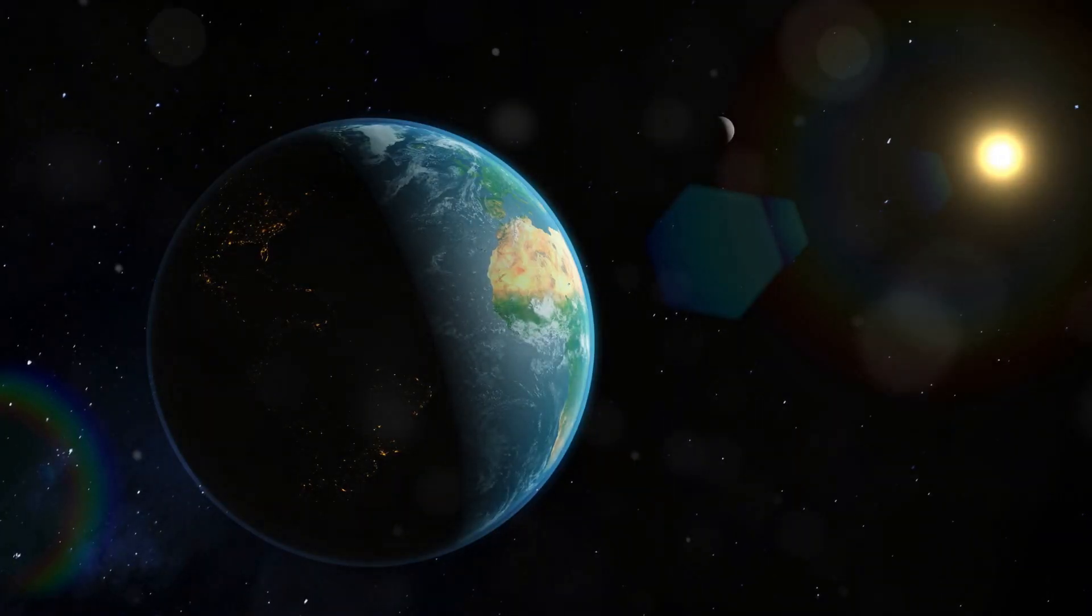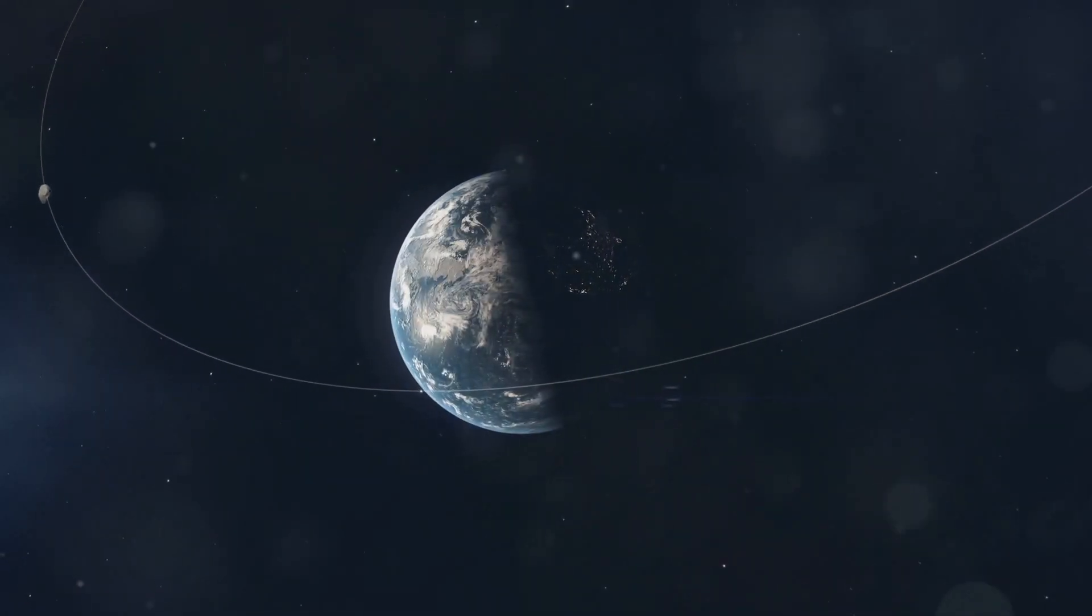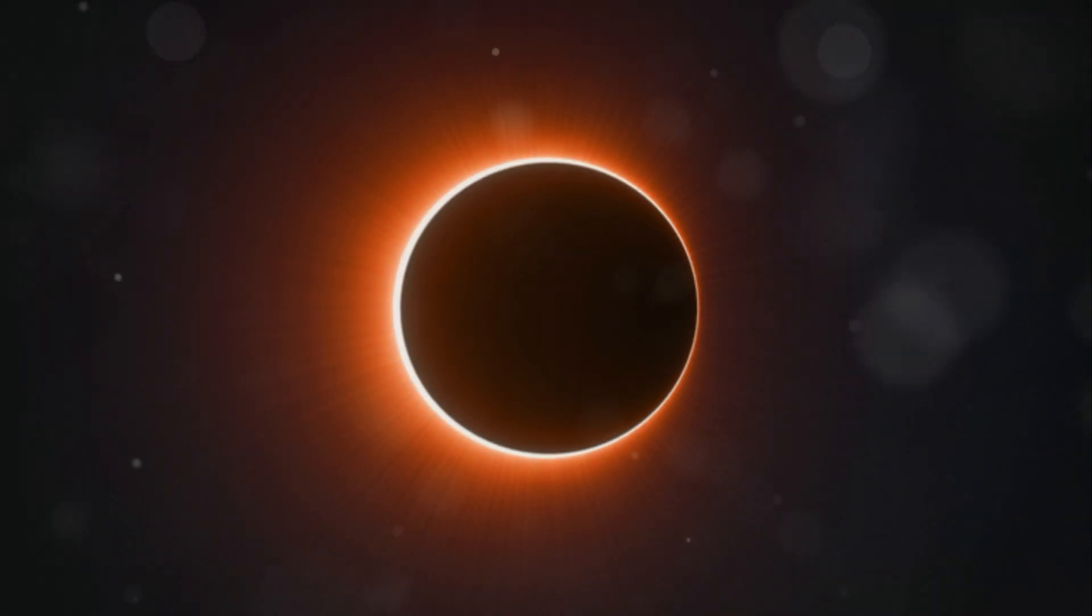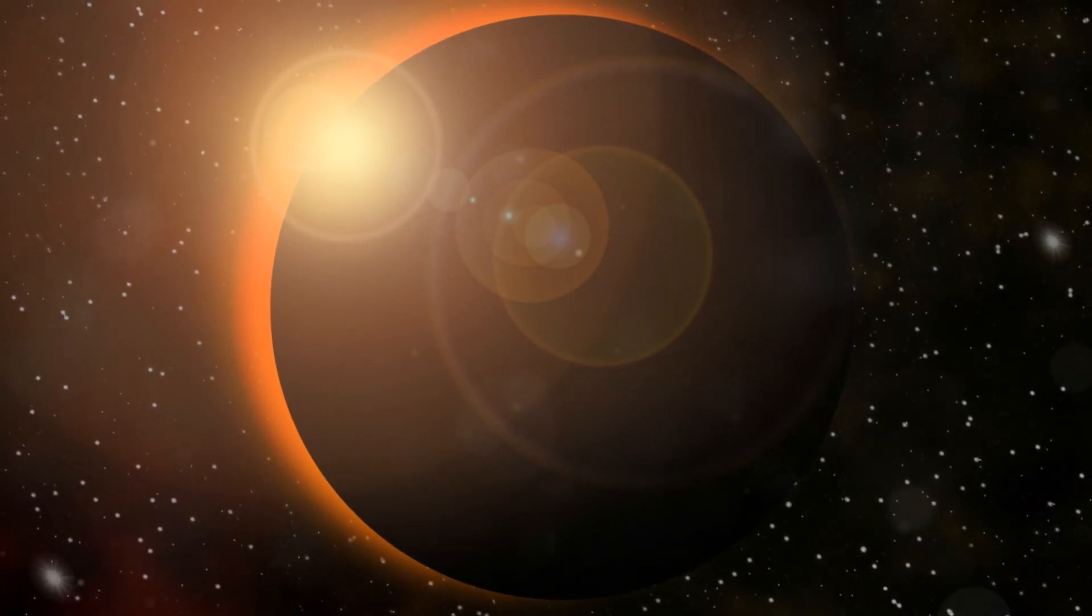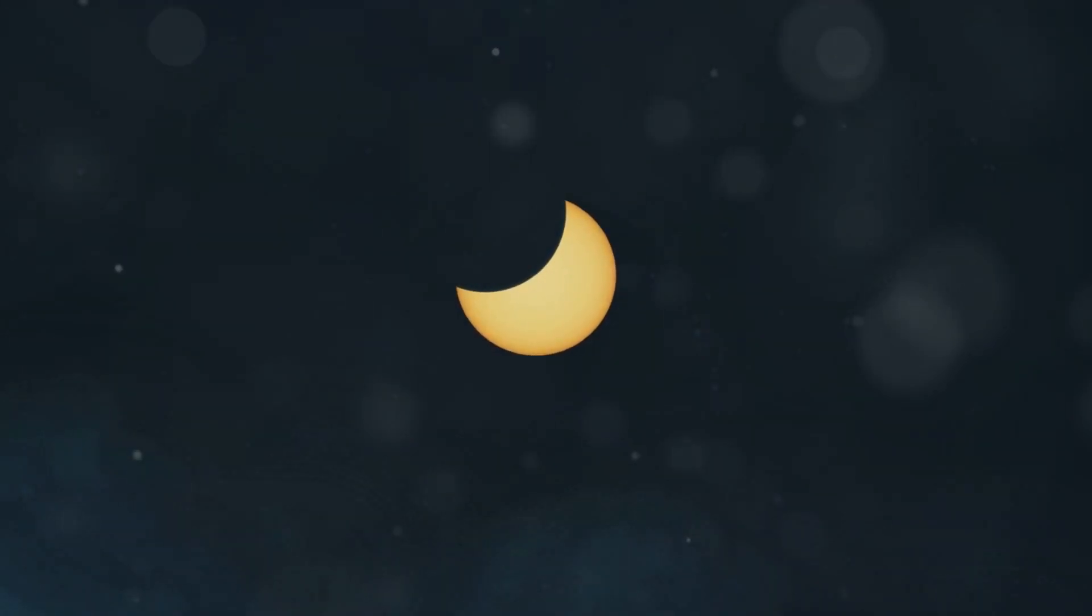You know that the Earth goes around the Sun, right? And the moon goes around the Earth. Well, sometimes these three line up in a straight line. When this happens and the moon is in the middle, a solar eclipse occurs. The moon casts a shadow on the Earth, and people in that shadow get to see the eclipse.